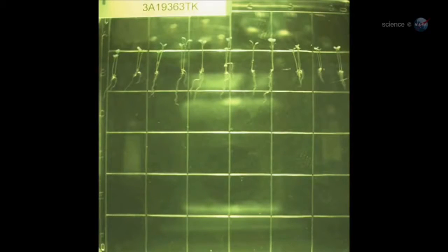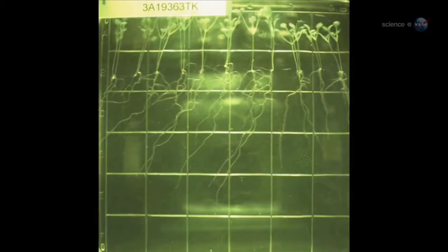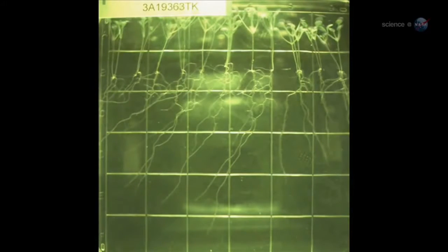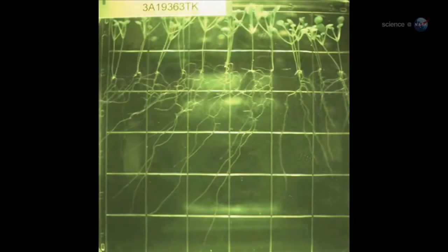An even bigger surprise was skewing, a pattern of root movement that, on Earth, helps plants navigate sticks and stones in soil as they search for water and nutrients. Paul recalls being with Rob Furl and watching some of the first images of Arabidopsis come down from the ISS. Are those roots skewing, we asked? The pattern was definitely there. It was pretty exciting, she says. This is something we thought only happened in gravity.